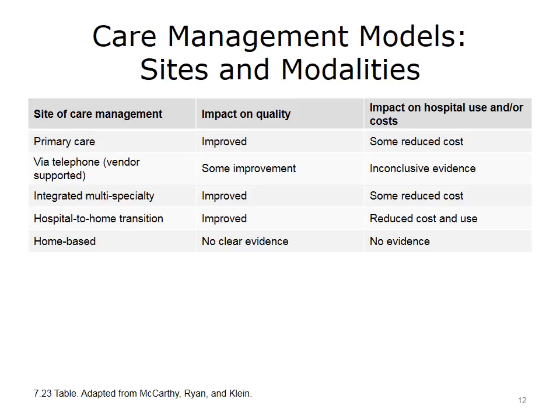This table summarizes care management models, both sites and modalities of care, based on evidence from McCarthy, Ryan, and Klein for patients with complex health care needs. When care management is included in primary care, we often find improved quality of care and some reduced hospital utilization. When care management services are delivered by telephone—often vendor-supported—many health plans and employers hire vendors to deliver population health interventions by telephone. There is some improvement in quality, but inconclusive evidence that telephone-delivered interventions are impactful on hospital use or costs of clinical and medical care.